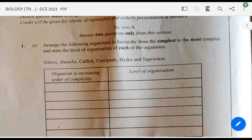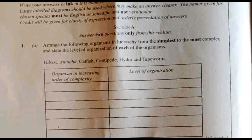Welcome to Biology Novdeck 2023. The first question says: arrange the following organisms in hierarchy from the simplest to the most complex, and state the level of organization of each. The organisms are: Volvox, Amoeba, Catfish, Centipede, Hydra, and Tapeworm.